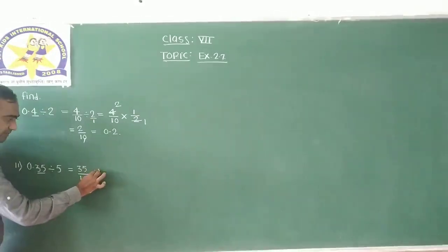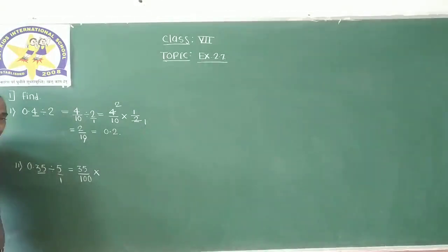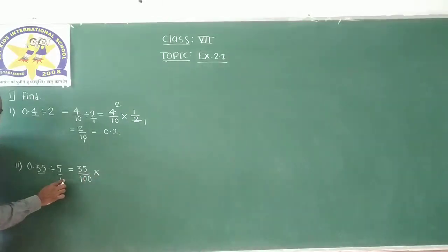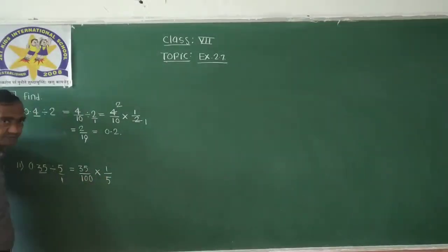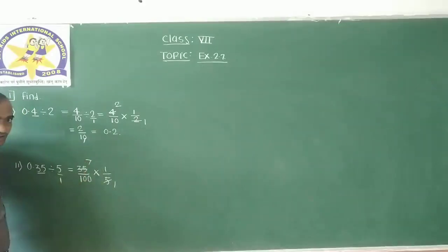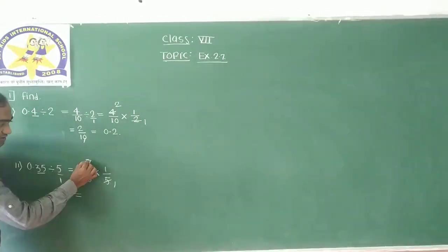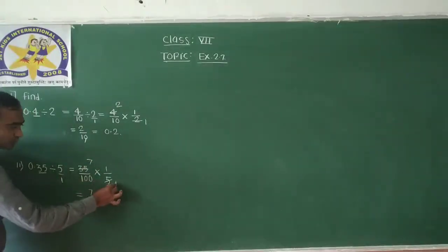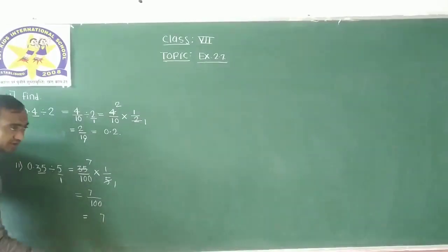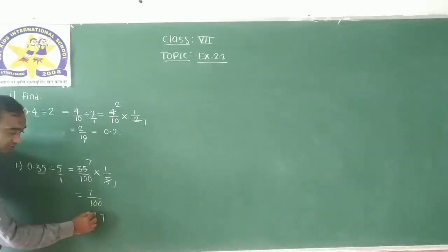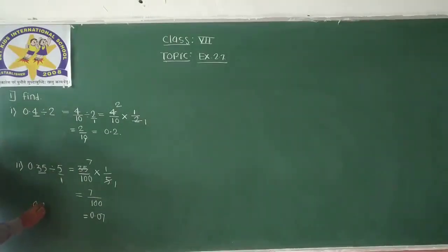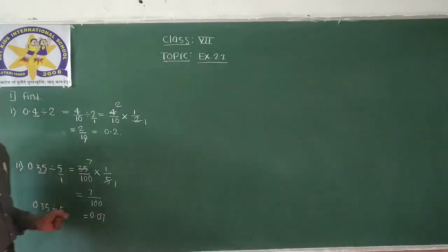Convert this division into a multiplication. You know that 5 can be written as 5 by 1. When you convert the division into a multiplication, you take the reciprocal of 5 by 1, which is 1 by 5. Now we can make a calculation between 5 and 35: 5 times 7 is 35. Make the multiplication in the numerator. 35 divided by 5 equals 7, and the denominator is 100. So 0.35 divided by 5 is equal to 0.07.